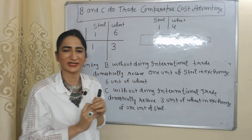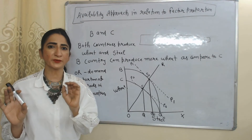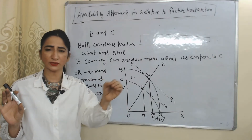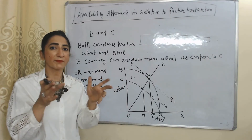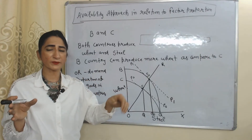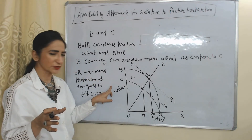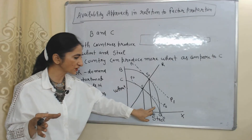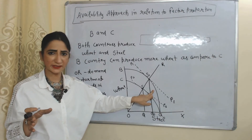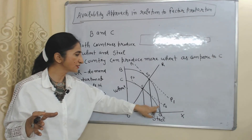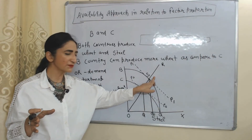Now we understand this theory in terms of factor proportion. We assume two countries B and C, and two goods: wheat and steel. Both countries produce both goods, but country B can produce more wheat compared to country C. In the diagram, the X-axis has steel and the Y-axis has wheat. CQ is the production possibility curve of country C, and BQ is the production possibility curve of country B. P0P0 and P1P1 are the international terms of trade lines, and the OR line shows the demand proportion of the two goods in the two countries.